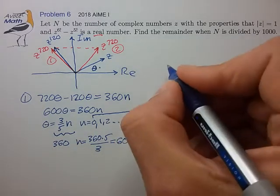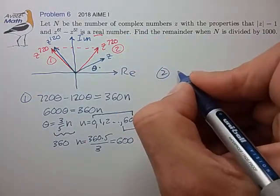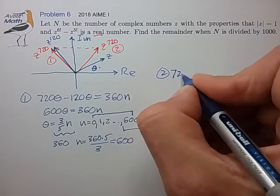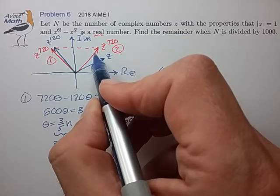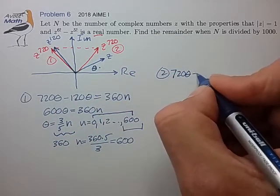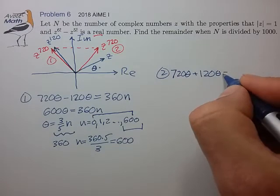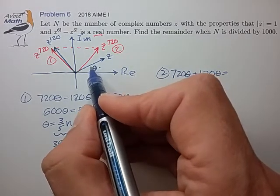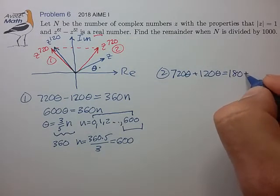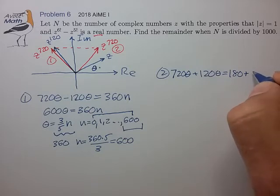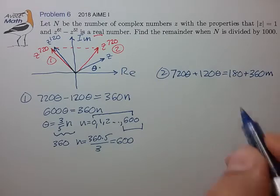Now let's try to solve this for the second case. In the second case, we have that the angle for z^720 is 720θ. And in this case, if we take the addition of the theta for z^120, we need to land on the negative real axis. So that'll be 180 degrees plus some integer multiple of 360. Let's call that 360m.